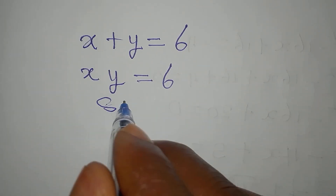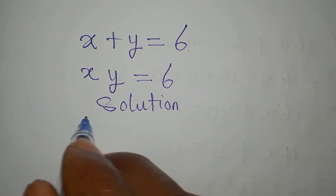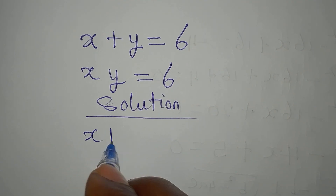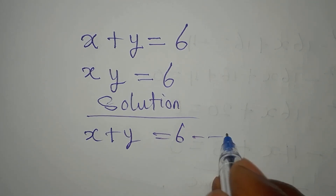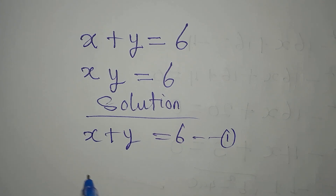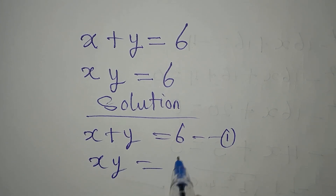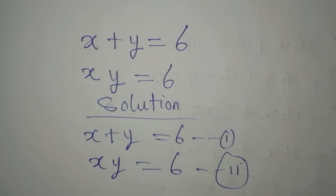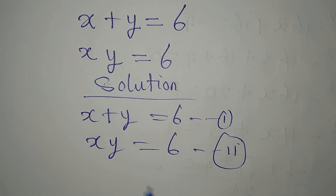Hello everyone, let's look at this problem and solve it simultaneously. x plus y equals 6 is equation 1, then x times y equals 6 is equation 2. But the question is: can this be solved? Is this solvable? We can only find out if we try.